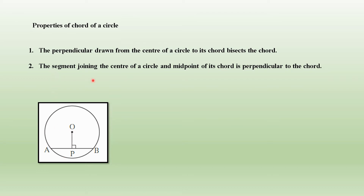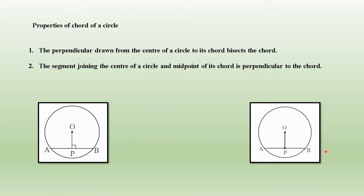The second property: the line segment joining the center of the circle to the midpoint of its chord is perpendicular to the chord. This property is the inverse of the first. The first says if the segment from the center is perpendicular to the chord, it bisects the chord. The second says if a segment joins the midpoint of the chord to the center of the circle, then that segment OP will be perpendicular to the chord.